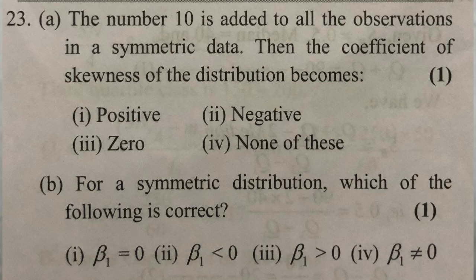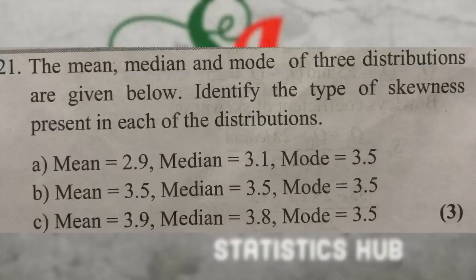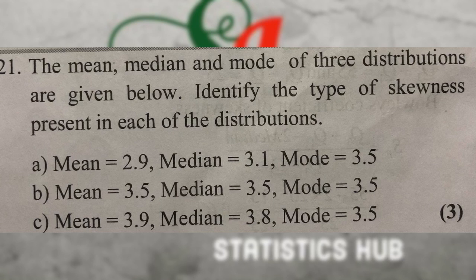For a symmetric distribution, the coefficient of skewness is equal to 0. The mean, median, and mode of three distributions are given below. Identify the type of skewness. Types of skewness are positive skewness, negative skewness, and symmetric. Symmetric distribution: skewness equals 0.